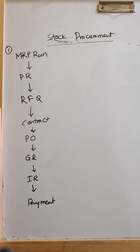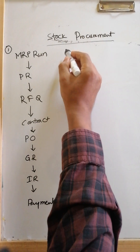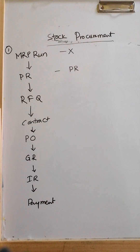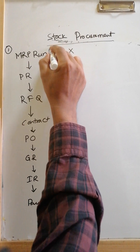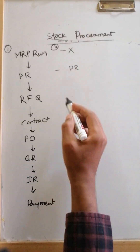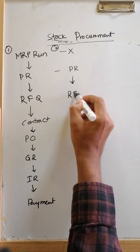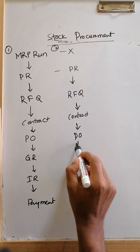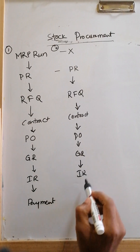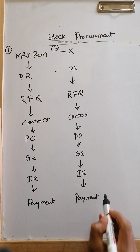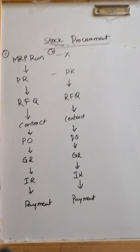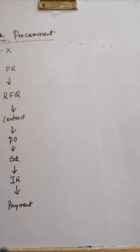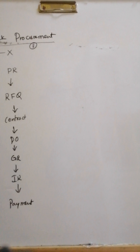Case 2: Some companies follow the same stock procurement but they don't use MRP run. Instead, they directly create the purchase requisition manually. This is not wrong — it's another valid possibility. Any department — admin, maintenance, anyone — can create the purchase requisition. Then they convert it to RFQ, then contract, then PO, GR, IR, and payment.